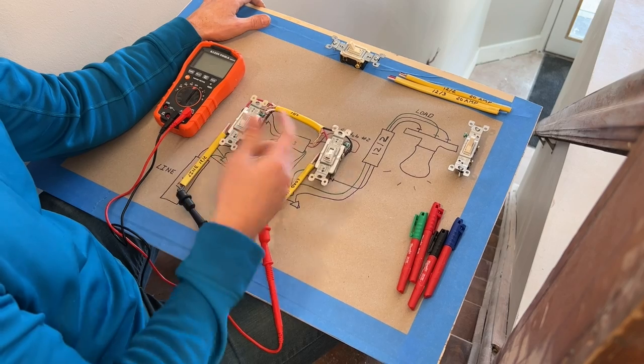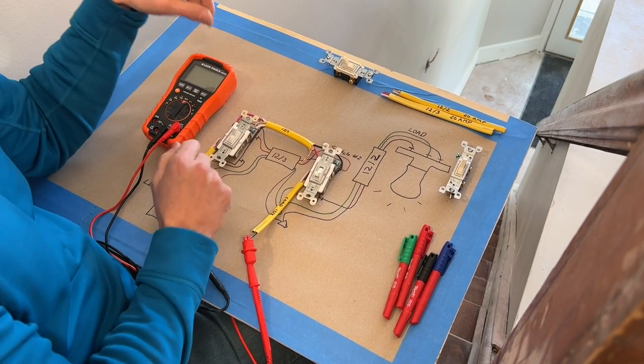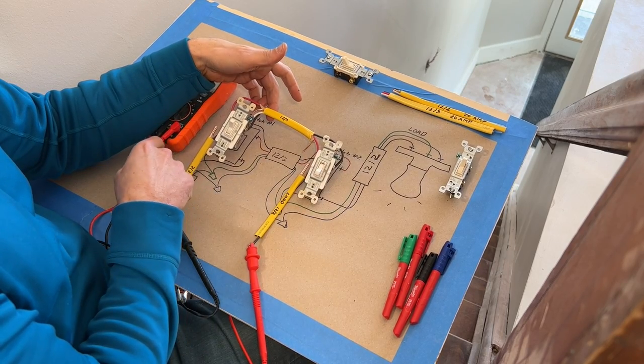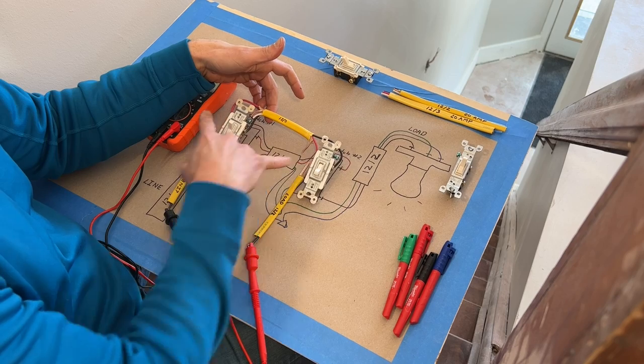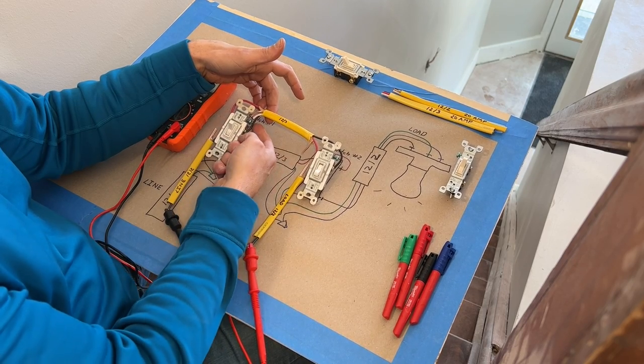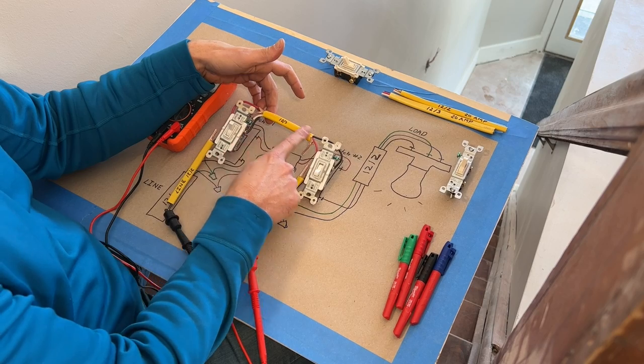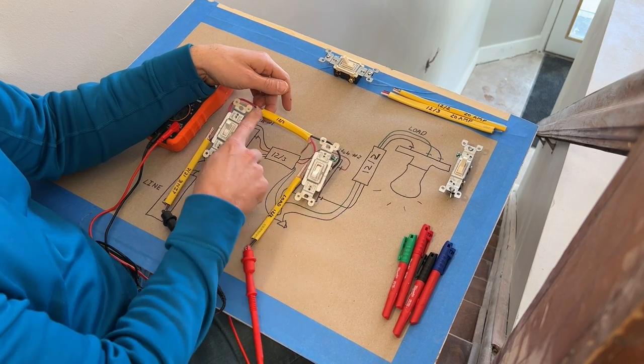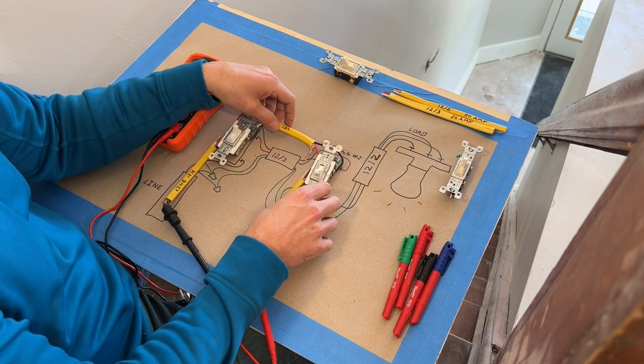But because you have two switches, it's much more complex, and thus you need the travelers. Your travelers here are represented by the red wire, like we talked about before, going into the gold terminal, and black wire going into the opposite gold terminal.